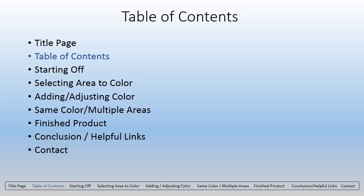Next, I'm going to show you how to select the area you want to color. And from there, we're going to add and adjust that color so you get the proper textures and colorizations that you want. The last part of the coloring process, I'm going to show you how to color multiple areas. Once we have the finished product, we're going to compare it to a similar picture in color.